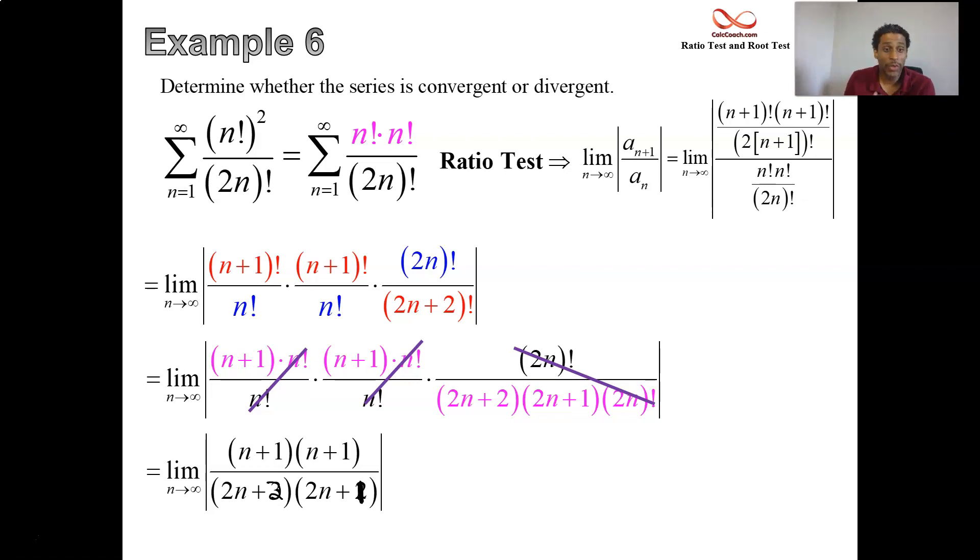What happens as n goes to infinity on that? Ultimately it's a quadratic over a quadratic. The degree of the numerator equals the degree of the denominator, and so the ratio of the leading terms is the resulting limit. You'll have an n squared as the leading term in the numerator, but a 4n squared as the leading term in the denominator.